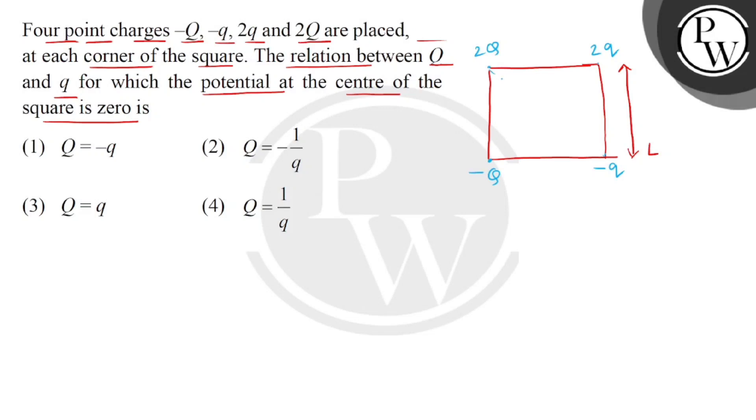Now, given us that if we are at the center of this square, center means the intersection of its two diagonals. If we are at the center, we think that the electric potential is zero, then we have to tell how capital Q and small q are related.